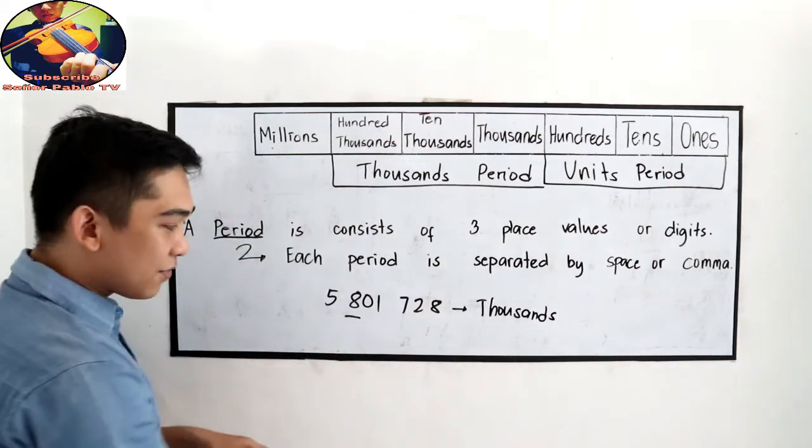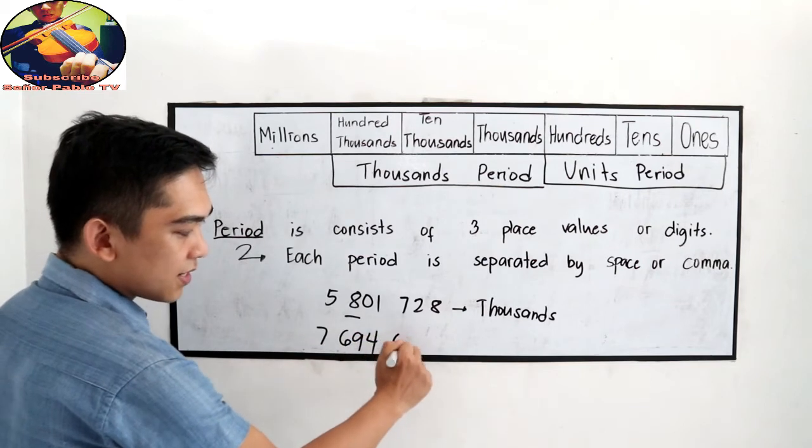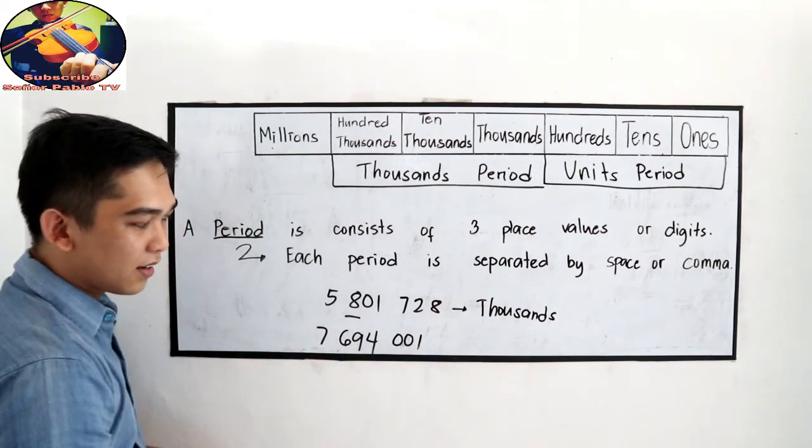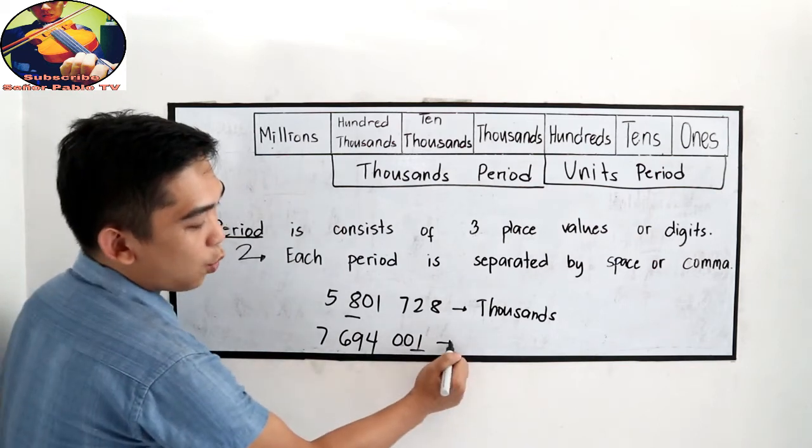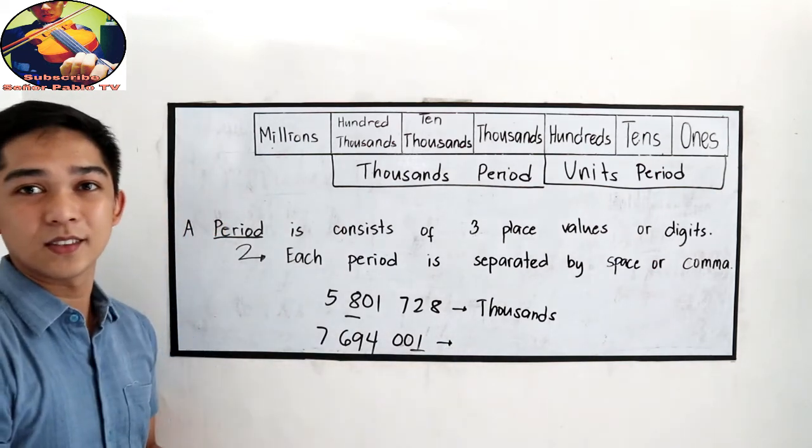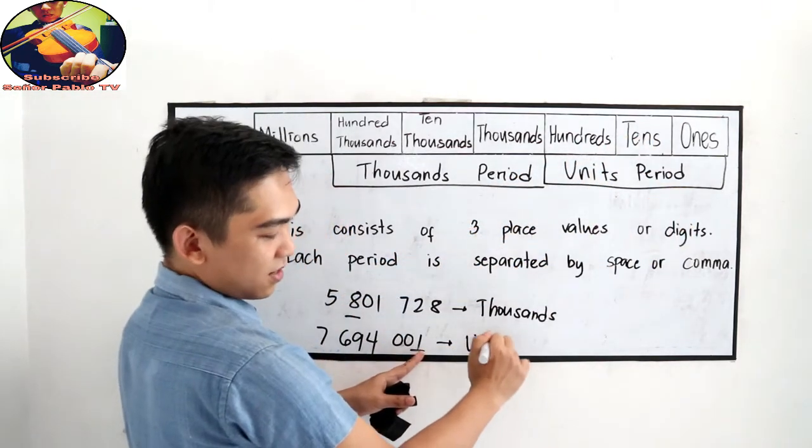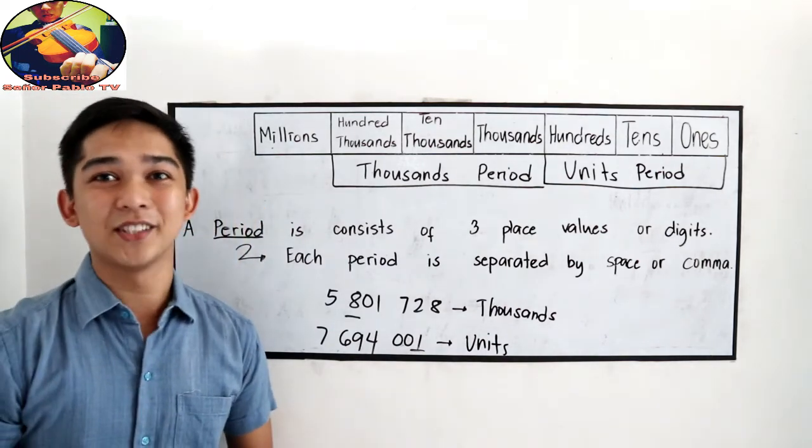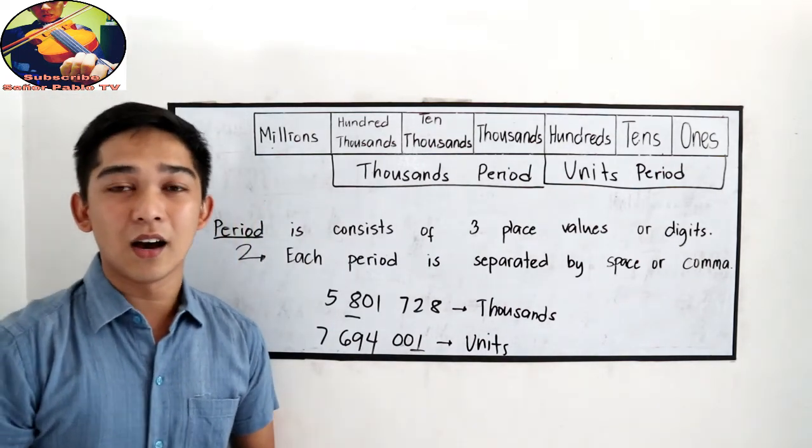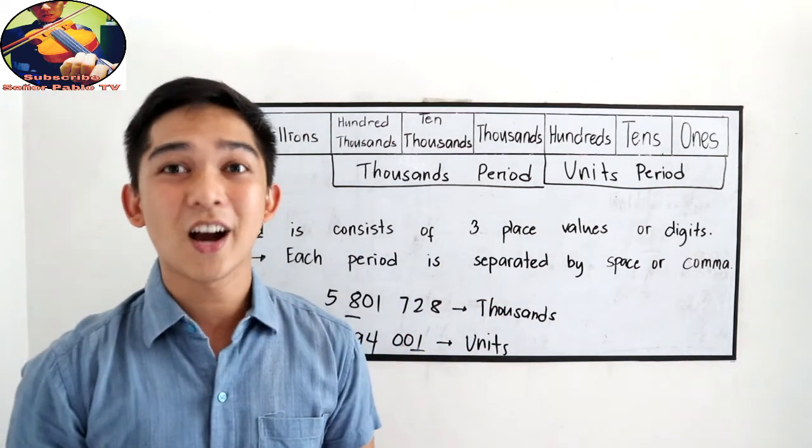Let's have 7,694,001. And the underlined number is 1. So what is the period? Ones. So the period of ones is in the units. So that is on how to find the period. Again, each period is separated by a space or a comma.